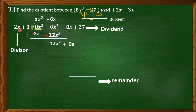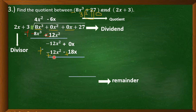Multiply: negative 6x times 2x equals negative 12x squared, and negative 6x times 3 equals negative 18x. Subtract — change the sign: negative 12x squared becomes positive 12x squared and negative 18x becomes positive 18x. Add: negative 12x squared plus positive 12x squared equals 0, and 0x plus positive 18x equals 18x. Bring down 27. Divide 18x by 2x — that equals 9.